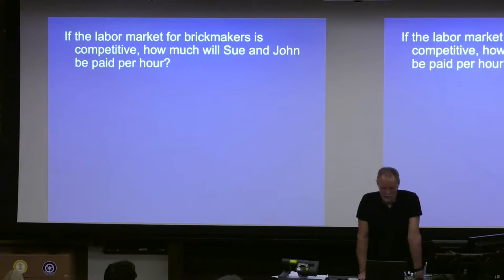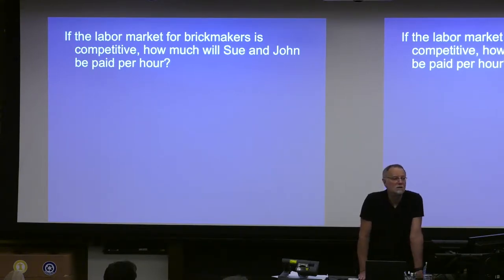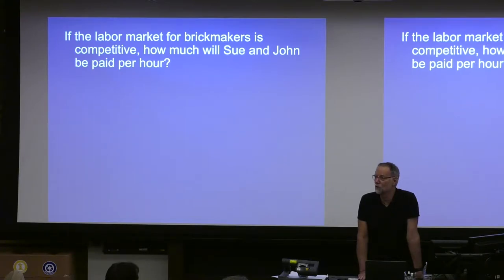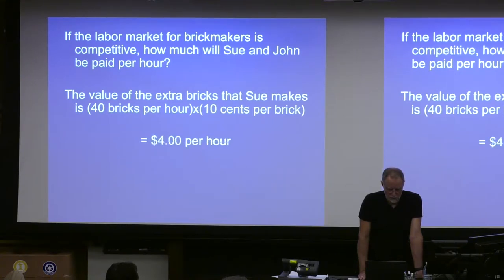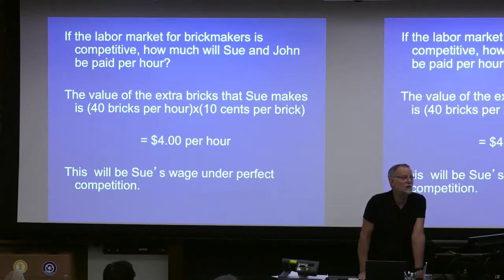It's a competitive market. How much will they be paid? The answer is straightforward: they'll be paid the value of what they add to the firm's bottom line. Sue makes 40 bricks. There are no other costs. The brick buyer comes and picks them up and leaves a payment of $4 for every hour she works, because her work corresponds to 40 bricks. So she's going to get $4 per hour — that's her wage under perfect competition. What's John's going to be? $3 per hour.